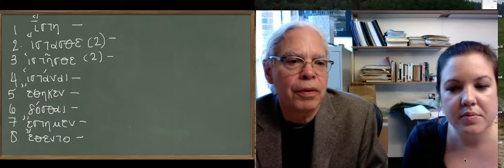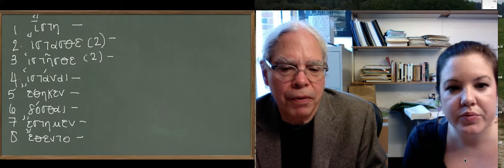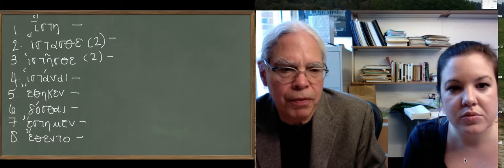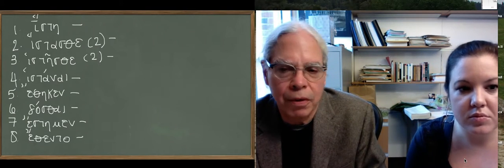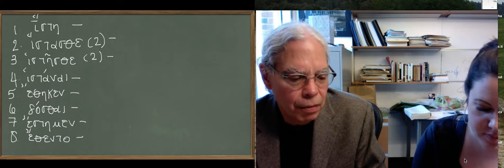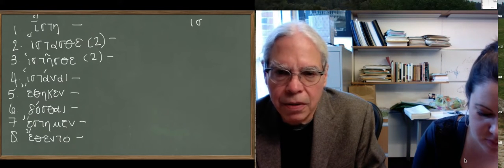These examples are from the third of the three athematic verbs. The examples we were looking at before, we had didomir, the verb to give, and tithemir, the verb to put or place. What we're talking about here is the verb histemir.